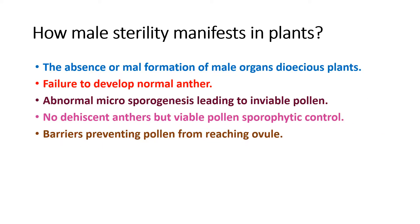How male sterility is manifested in plants: the absence or malformation of male organs in dioecious plants; failure to develop normal anthers; abnormal microsporogenesis leading to non-viable pollen; non-dehiscent anthers but viable pollen; sporophytic control; and barrier preventing pollen from reaching the ovule. These are all factors which influence male sterility in plants.